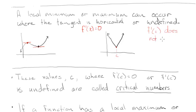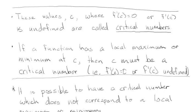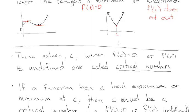So these are kind of your potential points where you might get local maximum and minimums. In fact, we give these points a special name. So these values of c, where f'(c) was equal to 0, or f'(c) was undefined, these are called critical numbers. And if a function has a local maximum or a local minimum at c, then c must be a critical number. So f'(c) equals 0, or f'(c) is undefined. So these kind of two pictures I gave you, that's the only way you can get maximum or minimums. The derivative has to be 0, or the derivative has to be undefined.